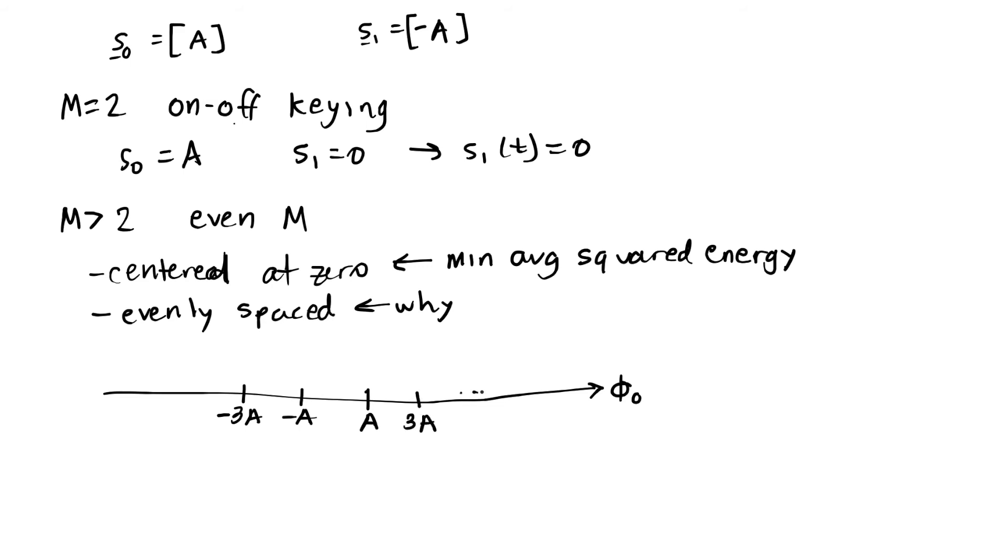For M greater than 2, we're going to start to have minus 3A and plus 3A. We're going to go all the way up to here to M minus 1 times A, and all the way down here to minus M minus 1 times A. You can see that we skipped 2A in between each pair of symbols. And in here right in the middle is 0, so it's centered at 0.